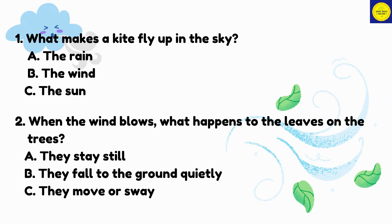Direction: Write the letter of the correct answer. Number 1: What makes a kite fly up in the sky? A. The rain, B. The wind, or C. The sun.